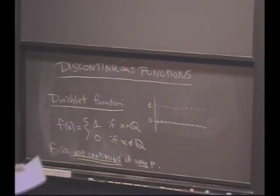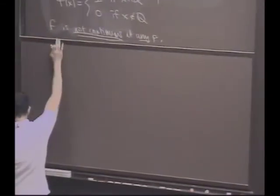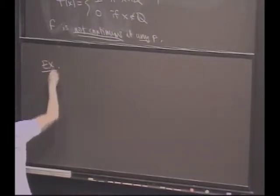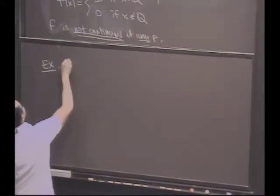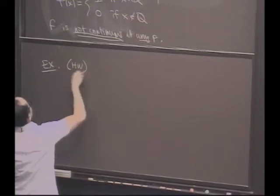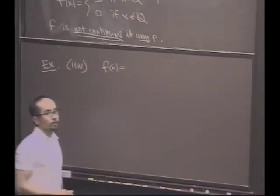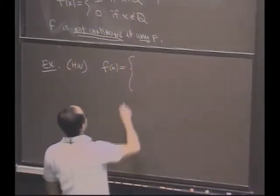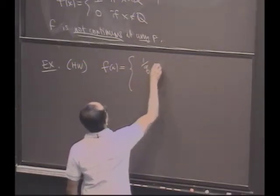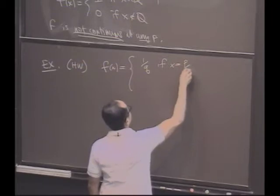This one may be a little more interesting. Let's consider the following example. So, this is the one that actually you're going to explore in your homework. It's another example of what's a kind of Dirichlet function. But I'm going to define it to be 1 over q, if x is rational of the form p over q in lowest terms.